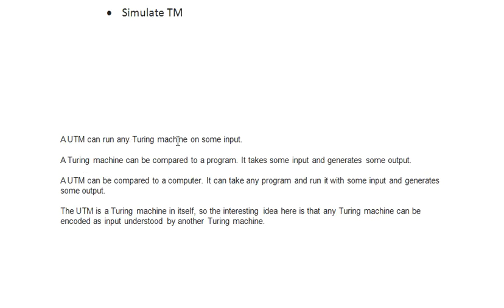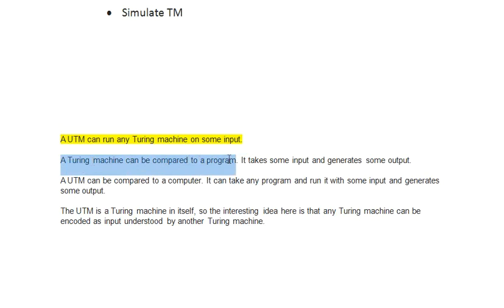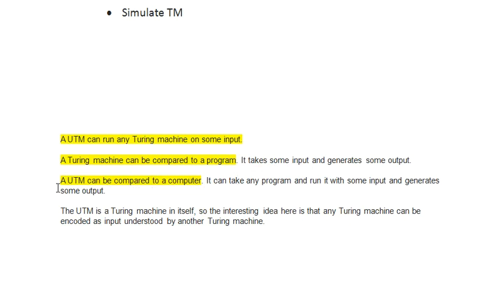A Universal Turing Machine can run any Turing machine on some input — that's why it is the superset of all Turing machines. Just as a computer takes any program and runs it with some input to generate output, the UTM is not confined to a particular program, making it the superset of all Turing machines.